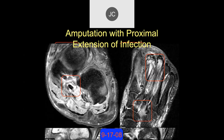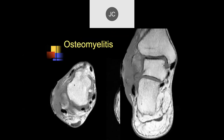One key thing to look for on MRI is whether you have a possible infected effusion within the tendons, because the tendon sheath is a very easy way for infection to spread proximally in a silent way. You can do a midfoot amputation, but if infection has tracked up along the flexor hallucis longus tendon proximal to the ankle and you don't detect that, you'll end up with incomplete treatment.